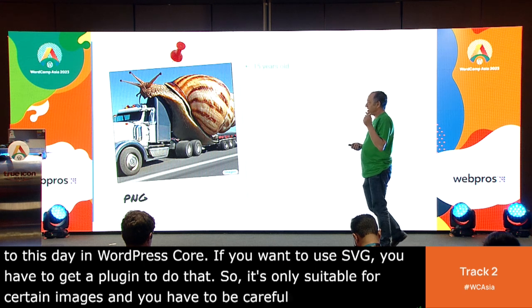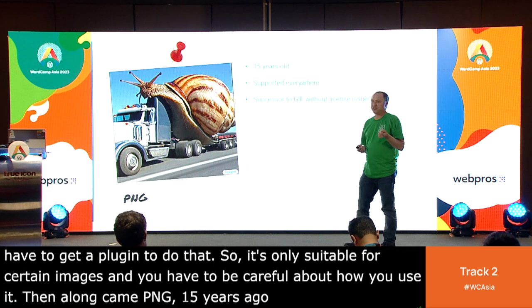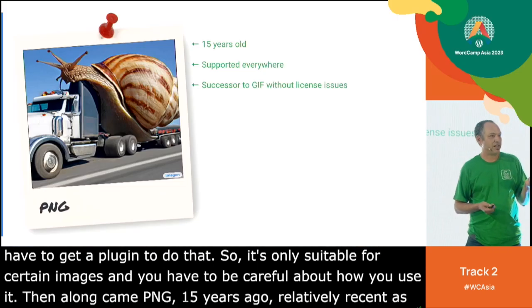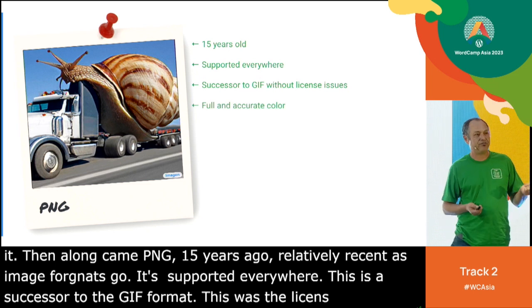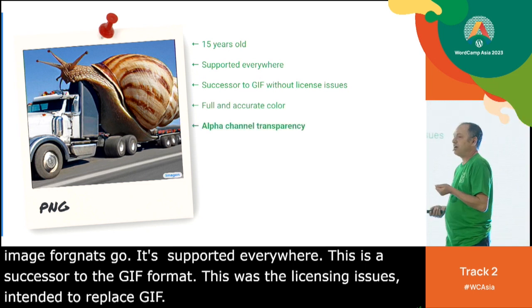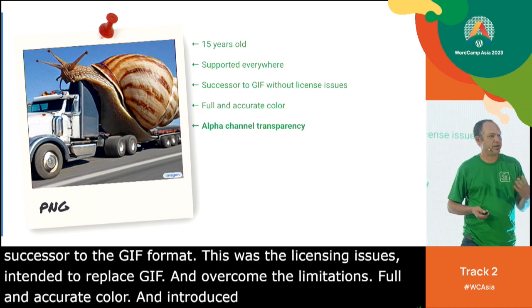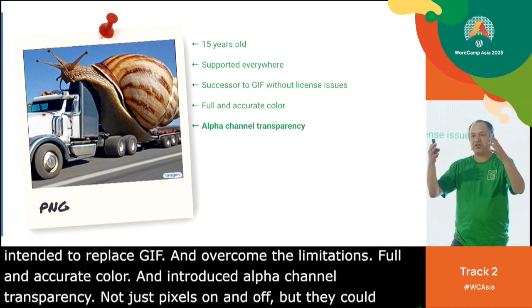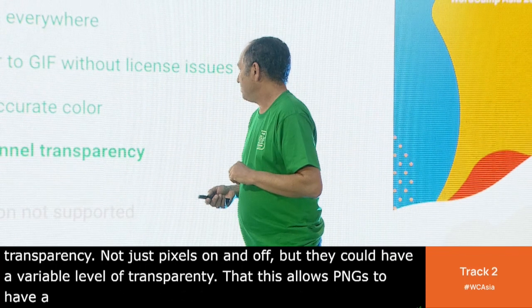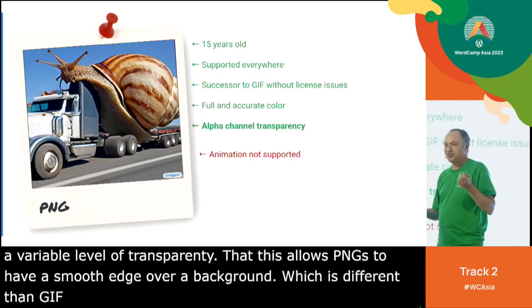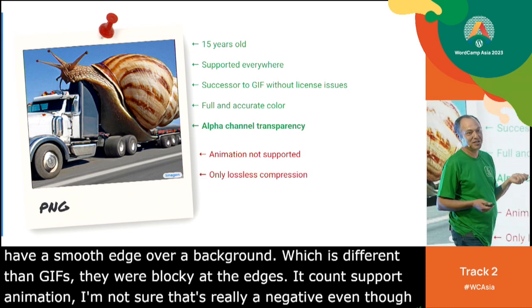Then along came PNG, 15 years ago. It's really a successor to the GIF format — intended to replace GIF and overcome some of its limitations. It has full and accurate color, and it introduced alpha channel transparency, where pixels can have a variable level of transparency, allowing PNGs to have a smooth edge when placed over a background, unlike GIFs which were always blocky at the edges. It doesn't support animation, and it only has lossless compression — no lossy compression like JPEG.